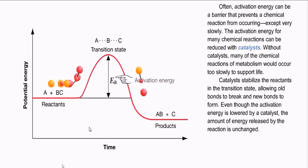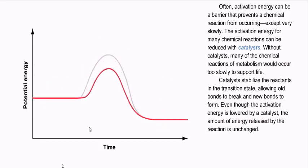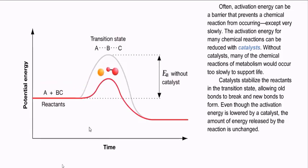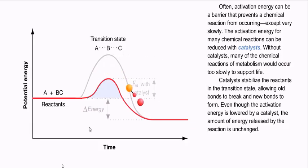Often, activation energy can be a barrier that prevents a chemical reaction from occurring, except very slowly. The activation energy for many chemical reactions can be reduced with catalysts. Without catalysts, many of the chemical reactions of metabolism would occur too slowly to support life. Catalysts stabilize the reactants in the transition state, allowing old bonds to break and new bonds to form. Even though the activation energy is lowered by a catalyst, the amount of energy released by the reaction is unchanged.